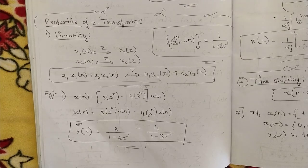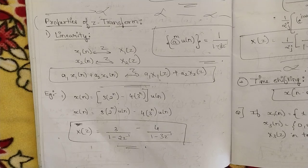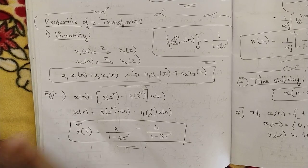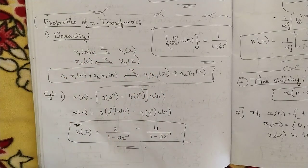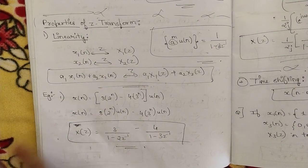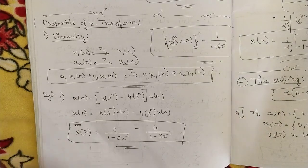Please go and watch the previous video completely. In this video we are going to discuss one property — one single property — along with some example problems on how to execute that property. I have already solved and kept these example problems. The linearity property is the first property, and I have solved some example problems just to make you clear about how this property actually works.